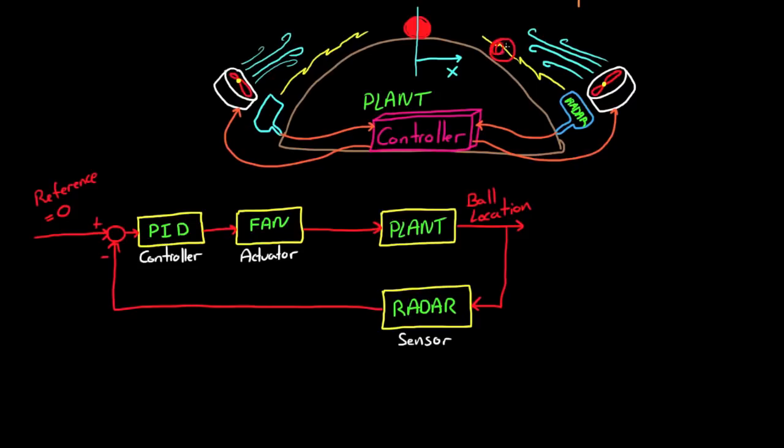So now when the ball is disturbed, it'll start to roll down one of the sides of the mountain. The radar guns will measure the motion, and through the controller, activate the fans to resist and reverse the motion of the ball.